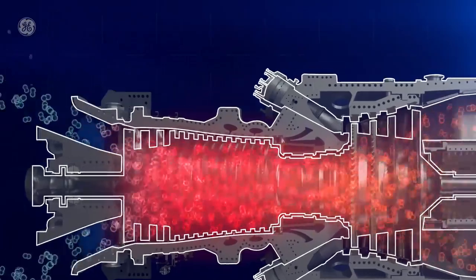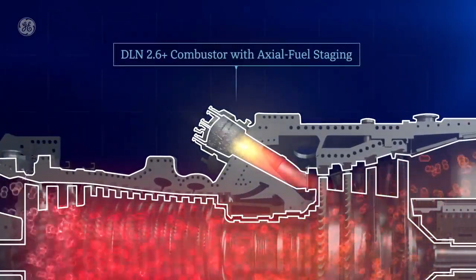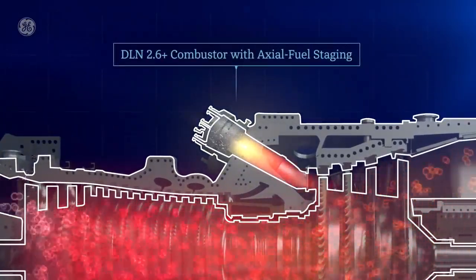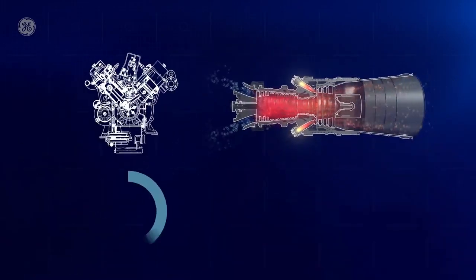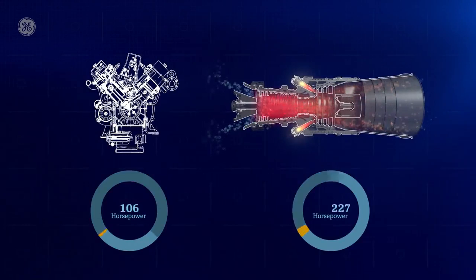Next, fuel is injected into the combustor where it mixes with the hot compressed air and is burned. This is chemical energy at work. Essentially, this is what happens in your family car's engine, but at about 2900 times more horsepower.